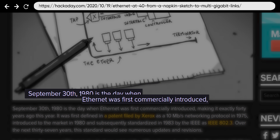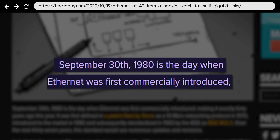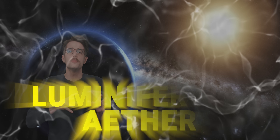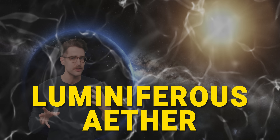Even though Ethernet made its debut in 1980, the answer to this question actually goes all the way back to the 1600s. Back then, scientists believed it was impossible for light to travel through a vacuum, so they theorized that outer space was actually full of some sort of substance that they dubbed luminiferous ether.